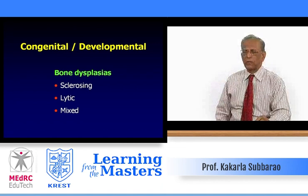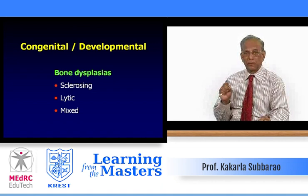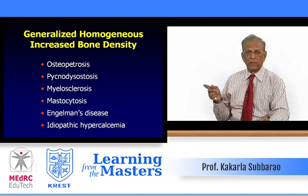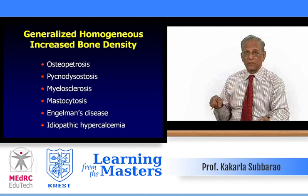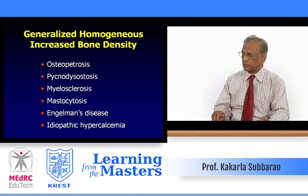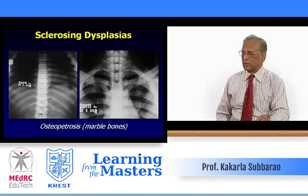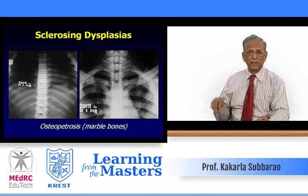Congenital or developmental bone dysplasias can be divided into three varieties: purely sclerosing, purely lytic, and a mixed type — both sclerotic and lytic. Entities with generalized homogeneous increase in bone density include: developmental osteopetrosis, pycnodysostosis, myelosclerosis, mastocytosis, Engelmann's disease, and idiopathic hypercalcemia, which is usually seen in children. Osteopetrosis, or so-called marble bone disease, shows diffuse sclerosis requiring clinical correlation for diagnosis.